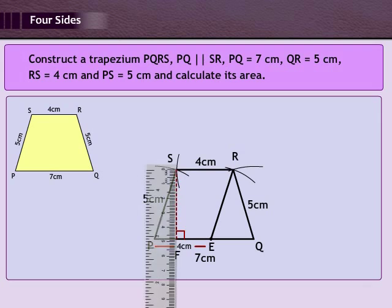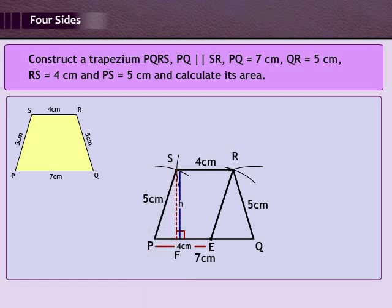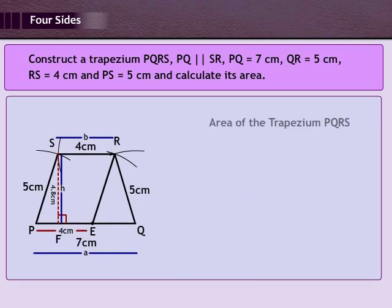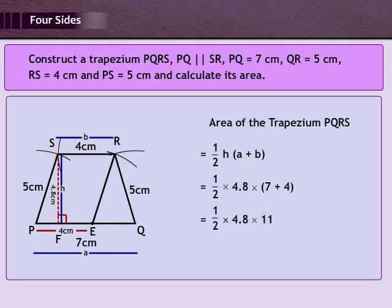Step 8: From S draw SF perpendicular to PQ; SF equals H equals 4.8 cm. PQ equals A equals 7 cm and RS equals B equals 4 cm. Therefore area of trapezium PQRS equals half into H into A plus B equals half into 4.8 into 7 plus 4, giving 26.4 cm square.